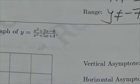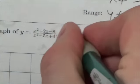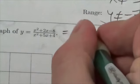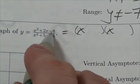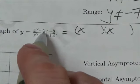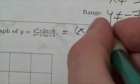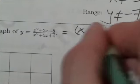What I want to do here is rewrite this by factoring it. So my numerator is going to become x and x. In fact, I need the product to be negative 8 and the sum here to be positive 2. So I'm going to be looking at positive 4 minus 2.